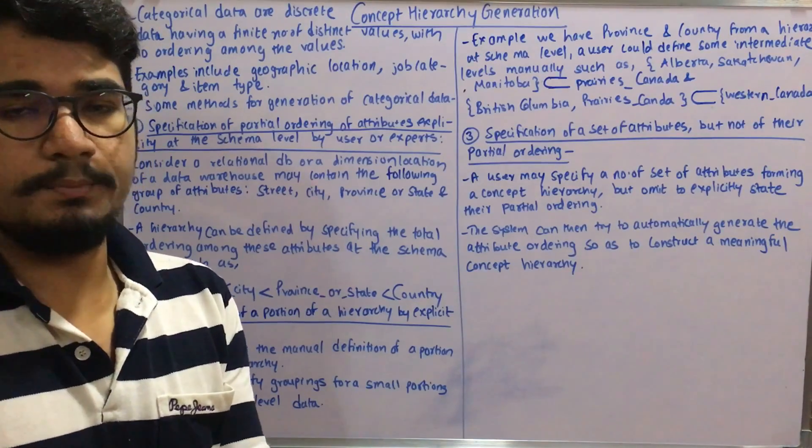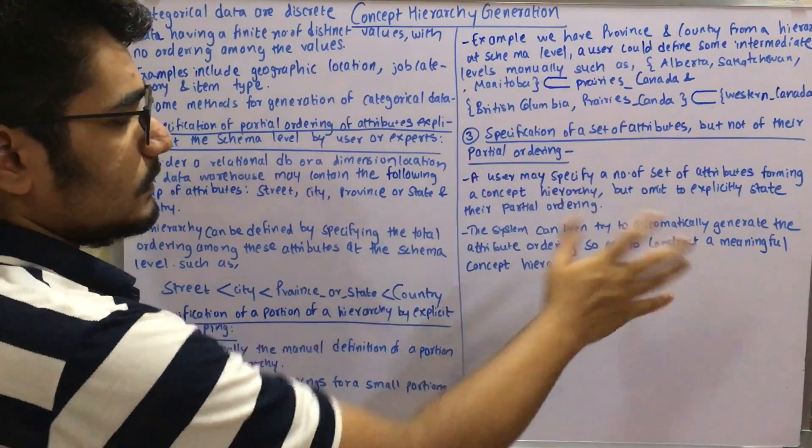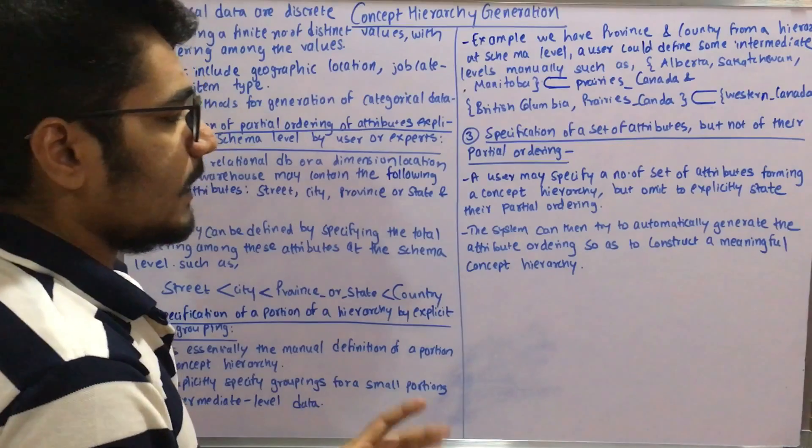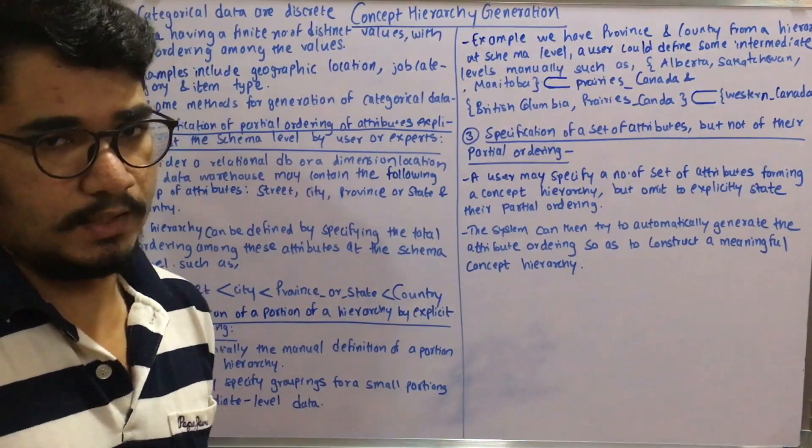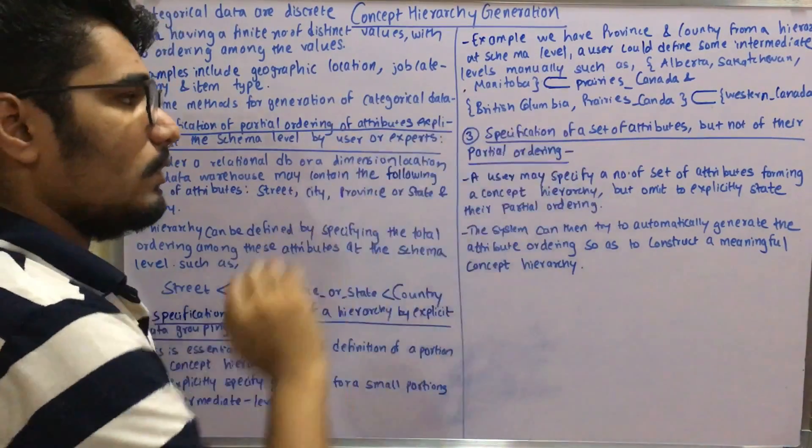The system then tries to automatically generate that attribute ordering so as to construct a meaningful concept hierarchy. This is all about specification of a set of attributes but not of their partial ordering.